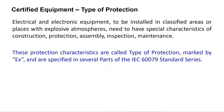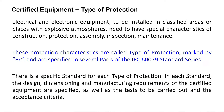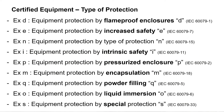Standard 60079 of IEC, the International Electrotechnical Commission, gives that information. These standards provide one standard for each type of protection. There are exactly nine types here, the most commonly used for gas and vapors in Hazard Zone classification.